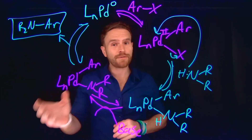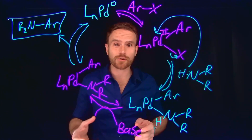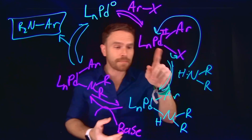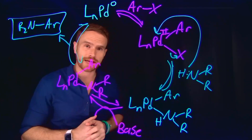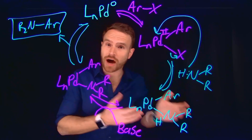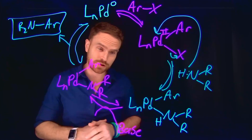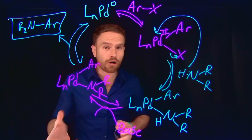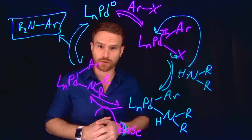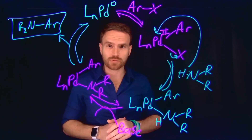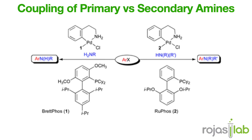Importantly, for each of these steps, there are different conditions that need to be considered in order to optimize each elementary step of this overall transformation. For example, control of the ligand can help with both oxidative addition and reductive elimination. Control of the base used to deprotonate the amine can also impact subsequent transformations, and many other reaction conditions can optimize these reactions, specifically when we consider the types of amines used to couple between different aryl groups.